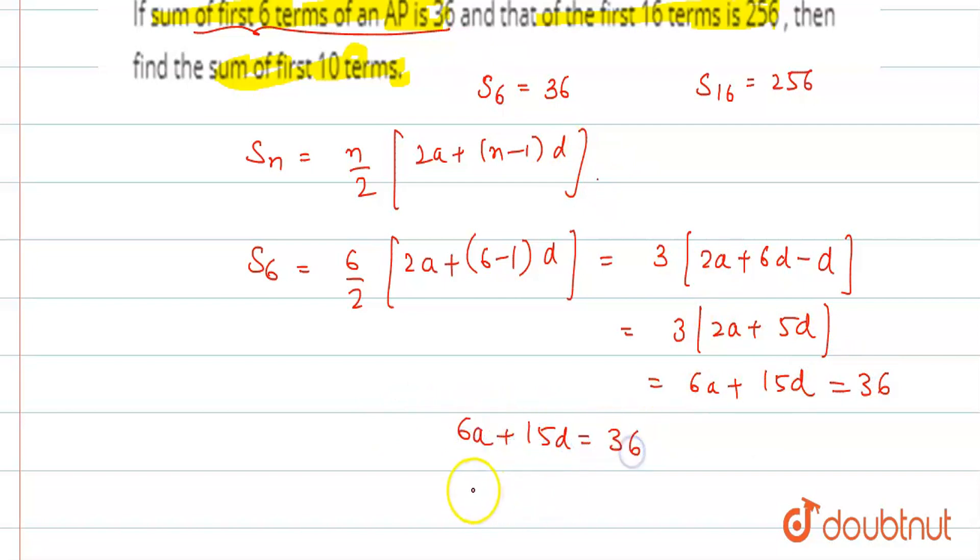Now, what do we do? We divide it by 3. So, 2a plus 5d equals 12. Let's call this equation 1.